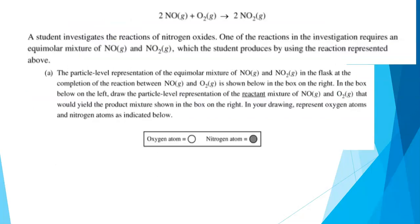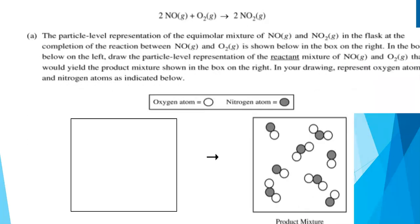Let's look at this question. We're looking at the reactions of nitrogen oxides, and one of the reactions requires an equimolar mixture of NO and NO2, and the student is going to make this using the reaction represented above: 2NO plus O2 to make 2NO2. We're going to do a particle level representation, where we represent oxygen atoms with open circles and nitrogen atoms with gray circles that are filled in.